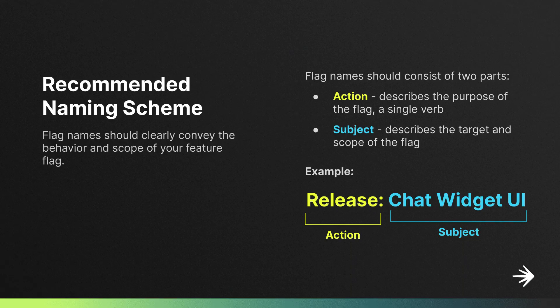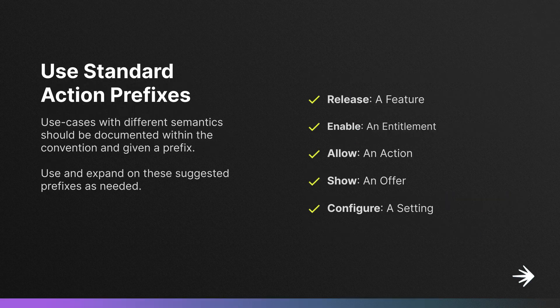Our recommended naming scheme includes two main parts. The first is the action, which is generally a verb describing the higher level purpose of the flag, and the second part is the subject, which more specifically defines the scope of the flag. For example, this could be describing a new UI widget that's being released. Besides release, other common prefixes include enable, allow, show, and configure. The prefixes you use will be dependent on how you're using flags and what's relevant for your use case, but the most important thing is to internally document your naming conventions and ensure that they're being used consistently across your organization.